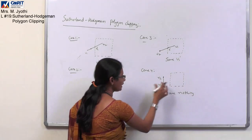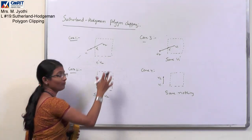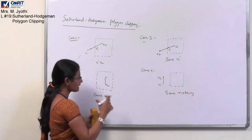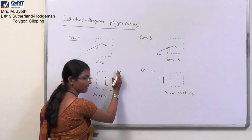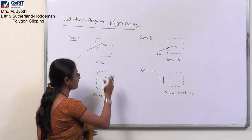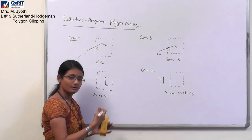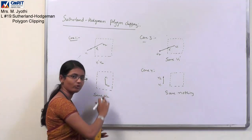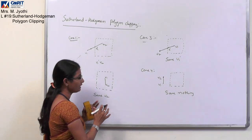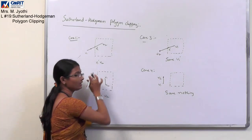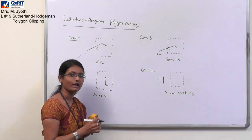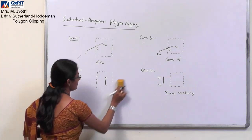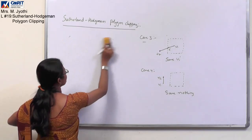This is how you process one edge of your clipping boundary. You then repeat the same process with the right boundary, the upper boundary, and the lower boundary. After all four boundaries are processed, you get a final image that lies inside your clipping window — that is the clipped polygon. Let's take one example and perform the operation.